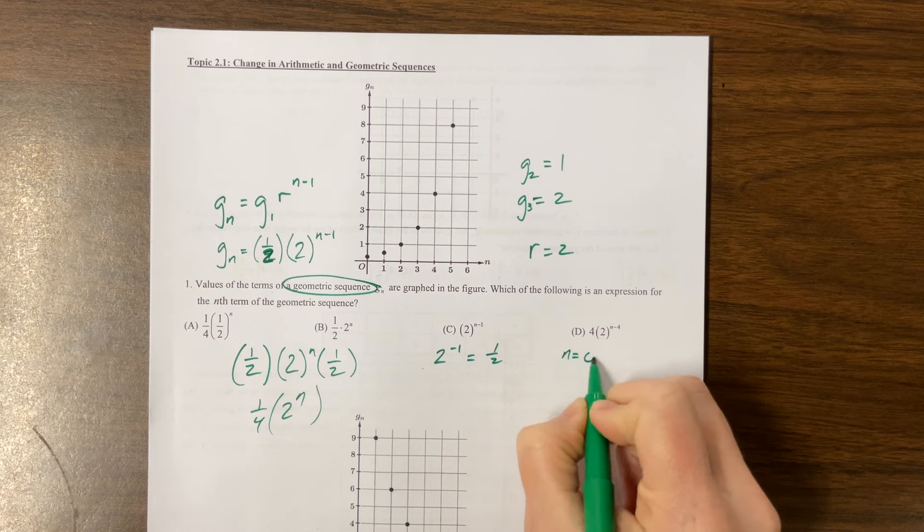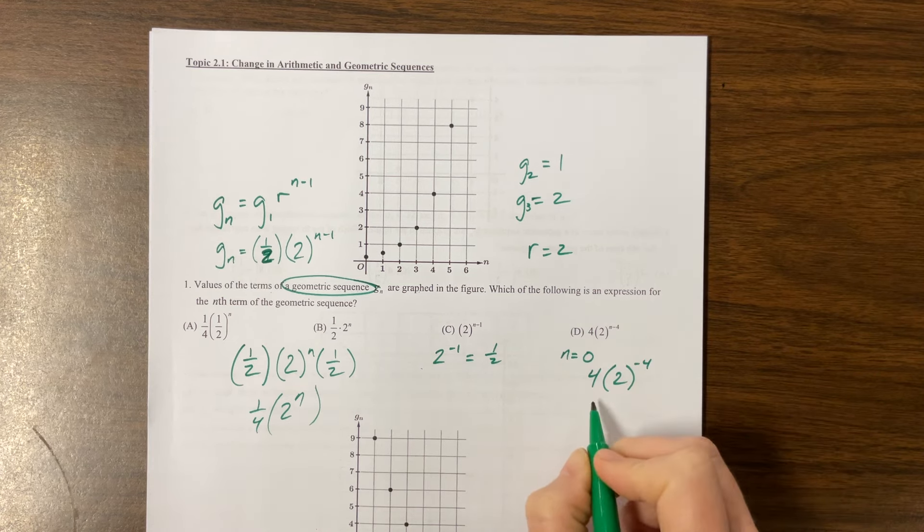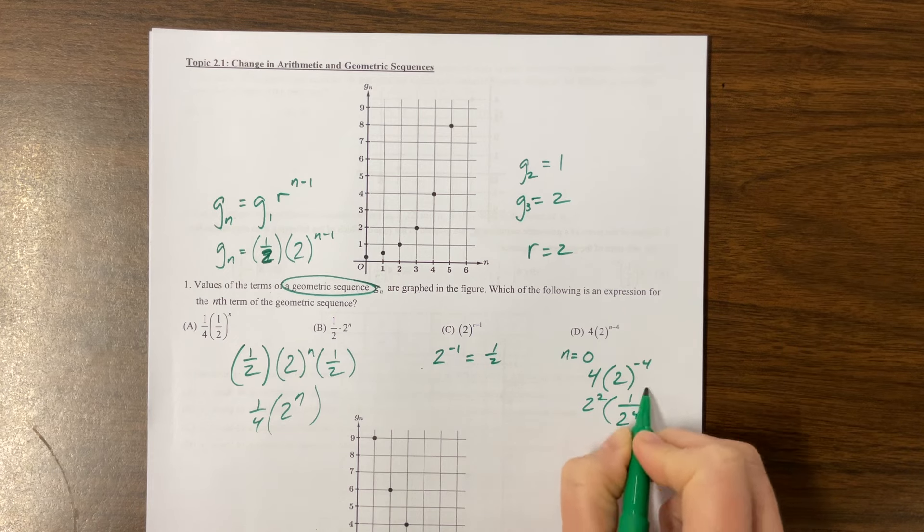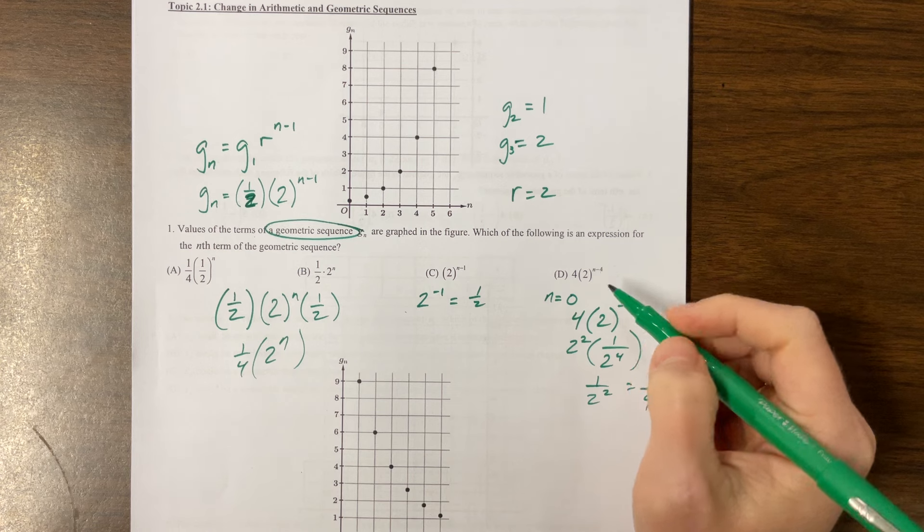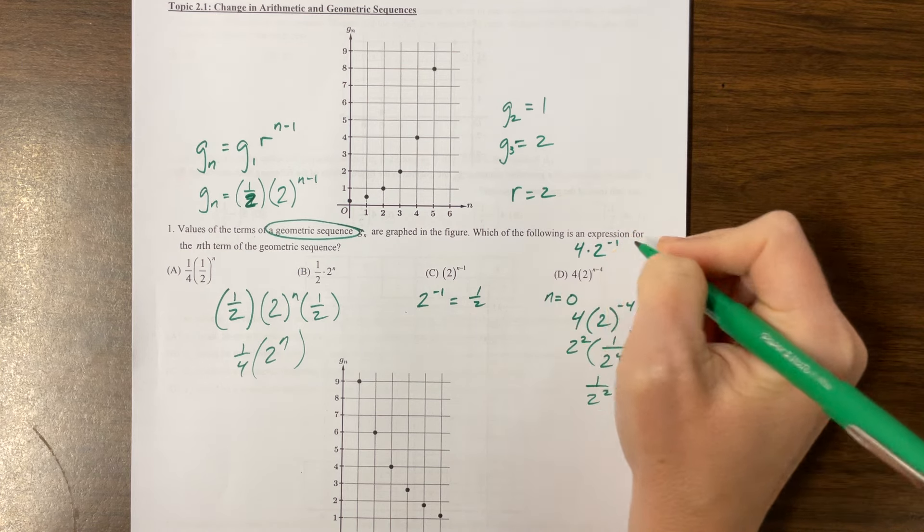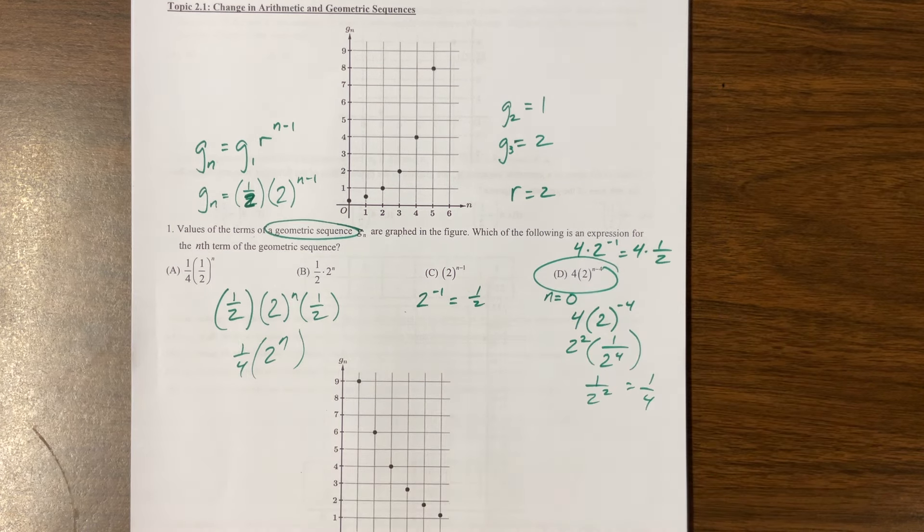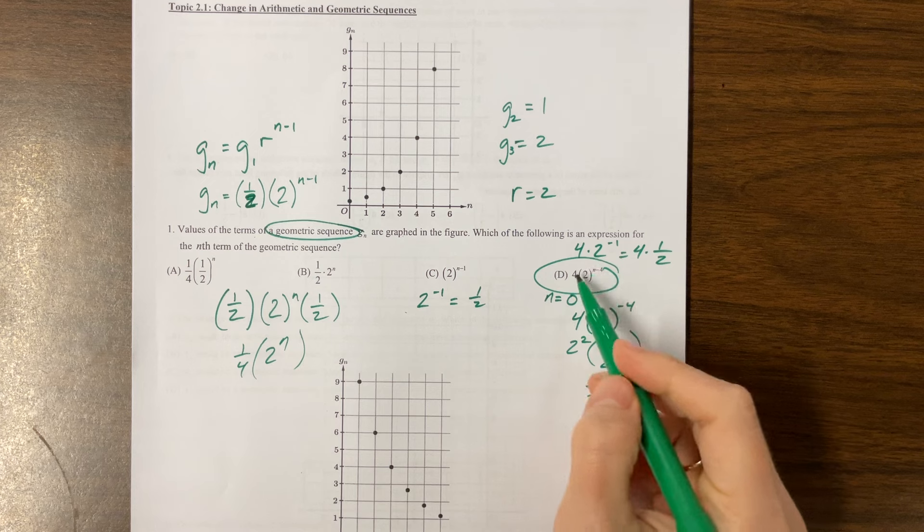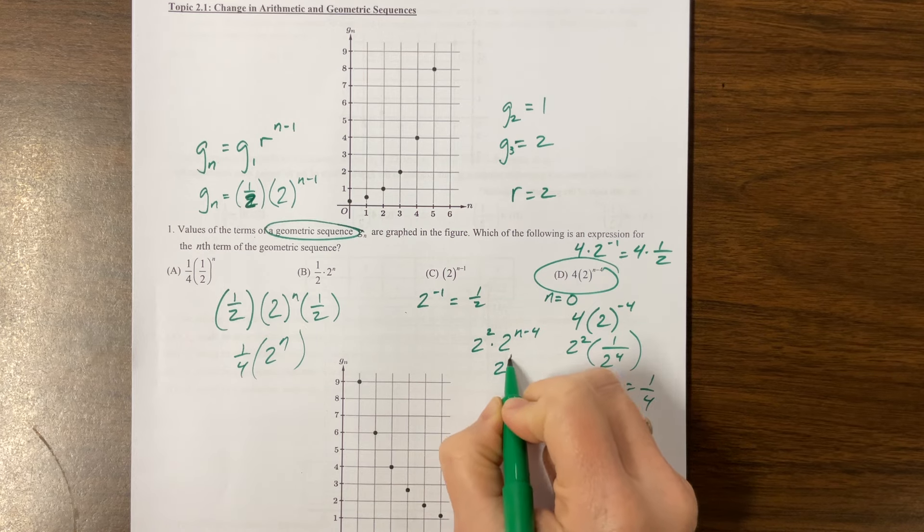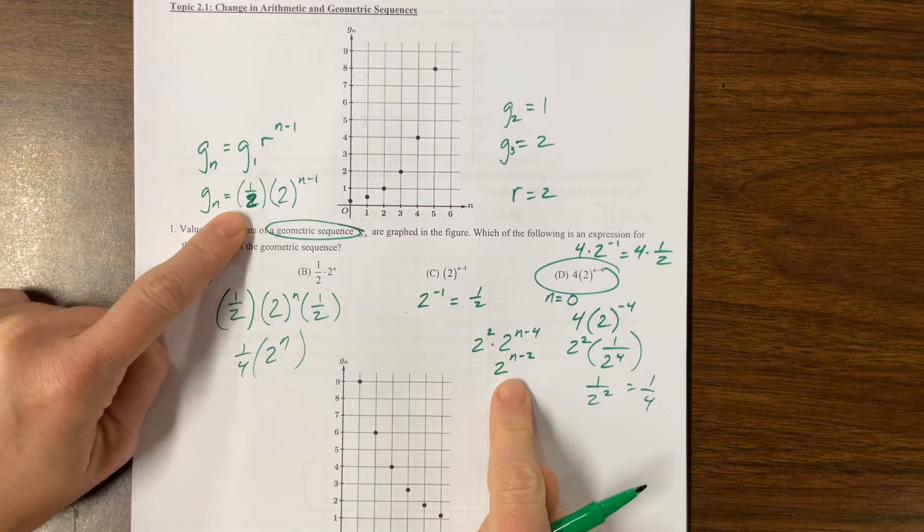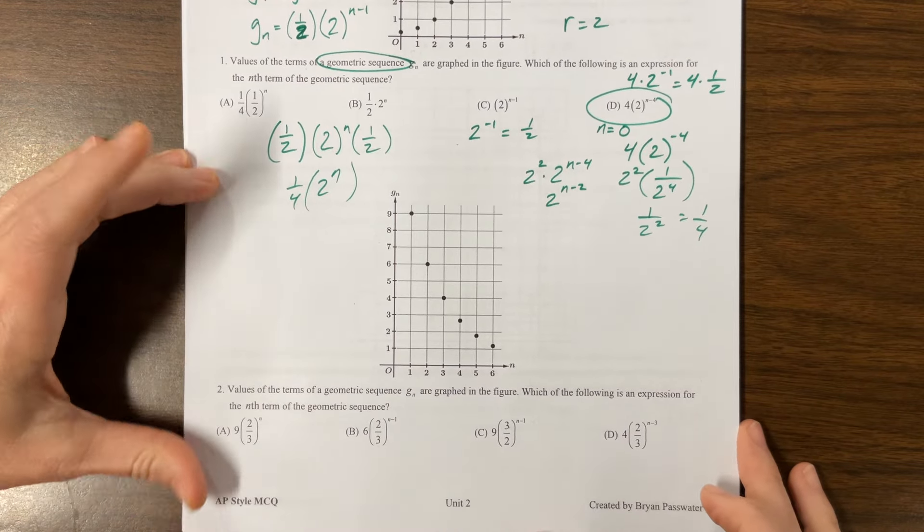This was a tricky one. You had to kind of think through, it wasn't written in the standard way that I would want to see it. Let's try. So when n equals zero, we should get one fourth. So I have four times two to the negative four. So this is two squared times one over two to the fourth, which gives me one over two squared, which is one fourth. Okay. That's promising. And then let's plug in another one. Let's plug in three. If I say four times two to the negative one, this is equal to four times one half, which is two at three, we were equal to two. So this is the right answer.